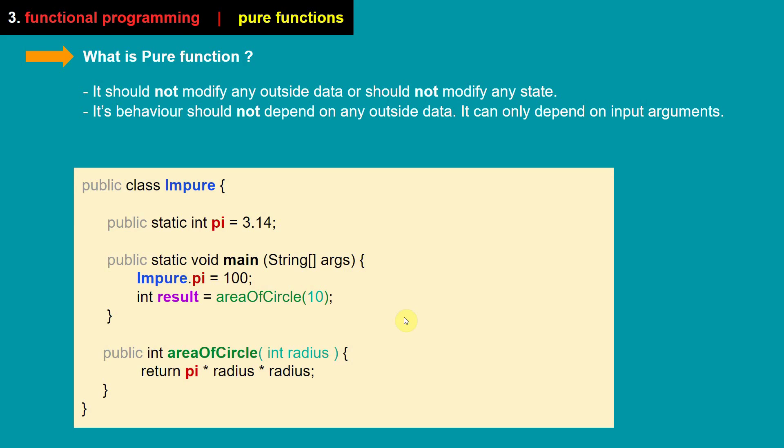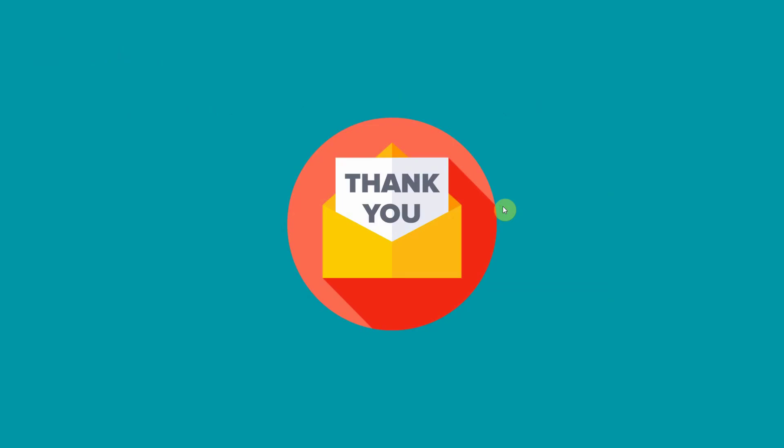Those are the two important properties of a pure function, and it's our responsibility to use pure functions as lambdas. In the next videos we are going to see functional interfaces, lambdas, and the streams API. Thank you, see you again, bye!